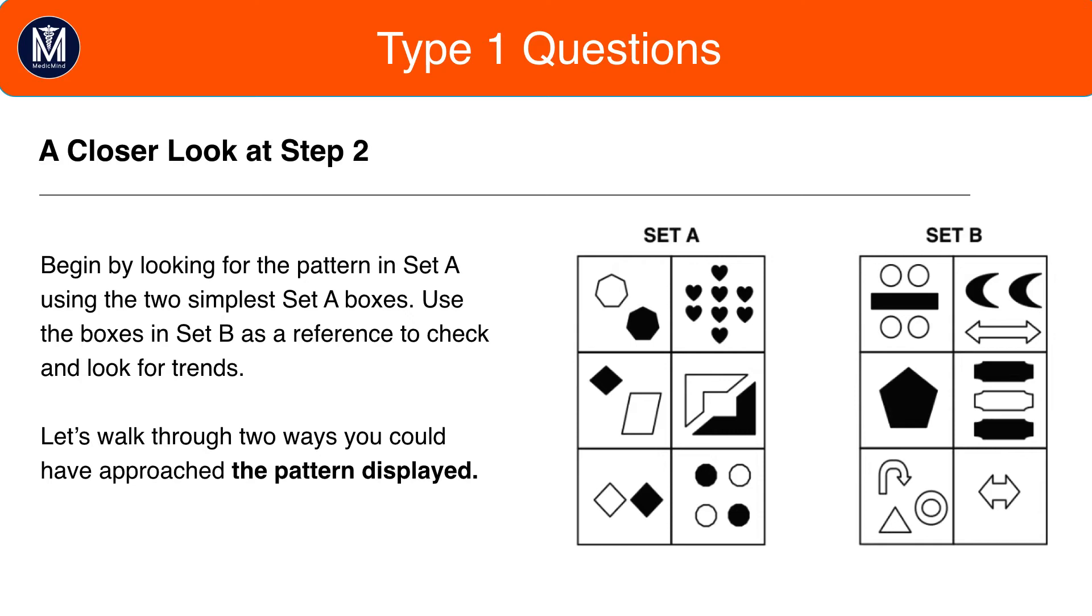Step two, find the simplest box in Set A, and compare with either the simplest box in Set B or the second simplest box in Set A.